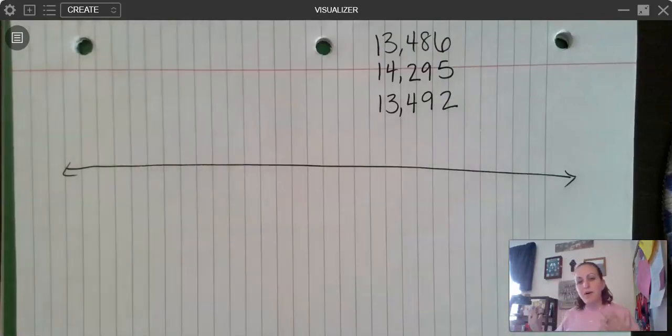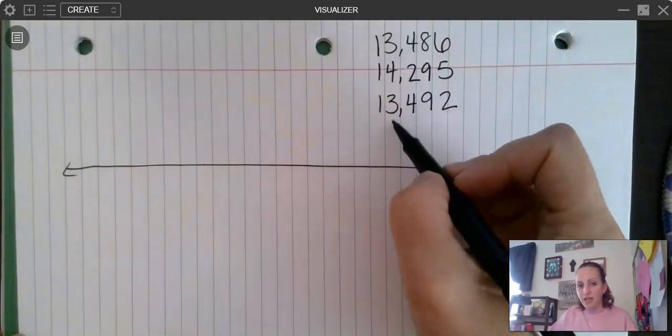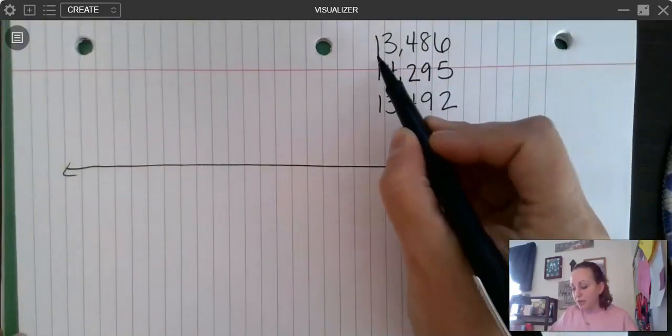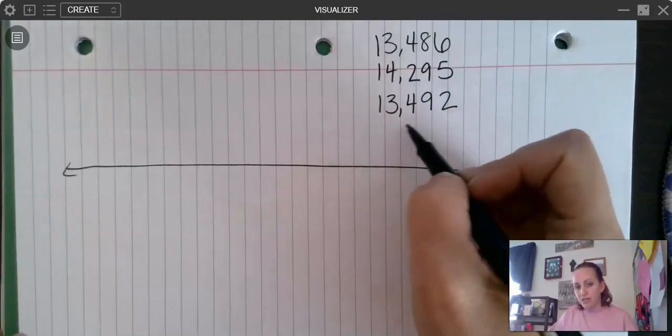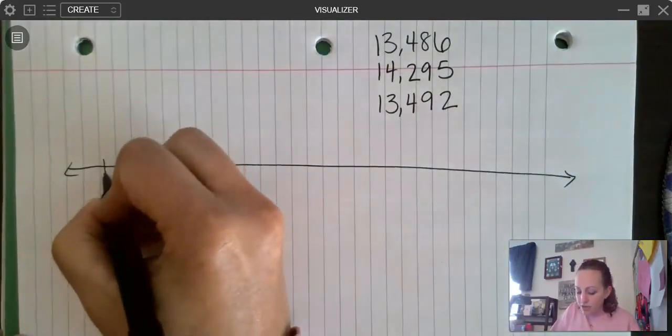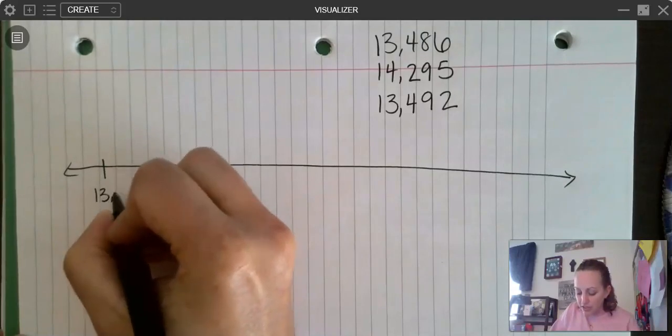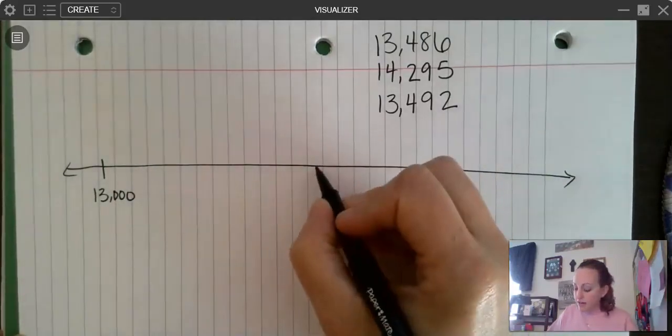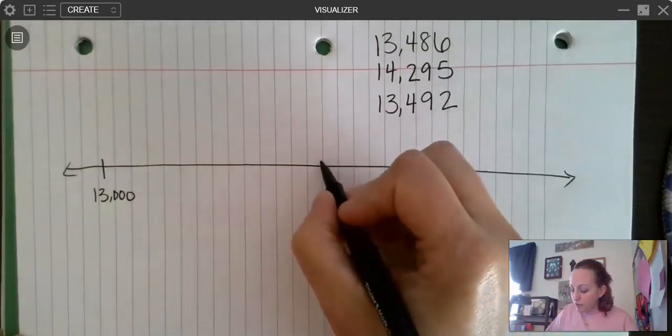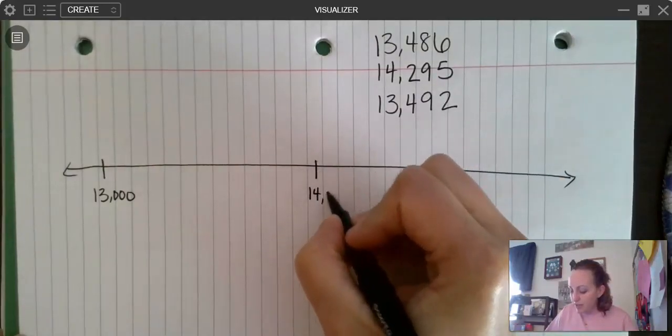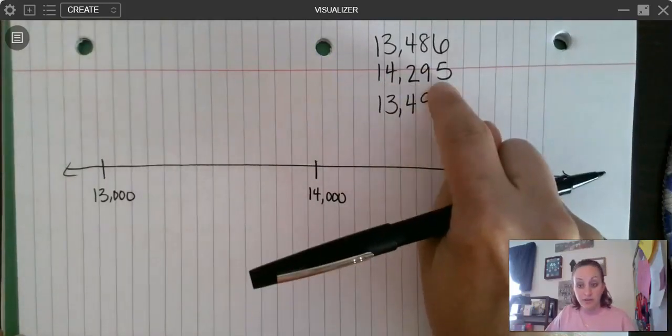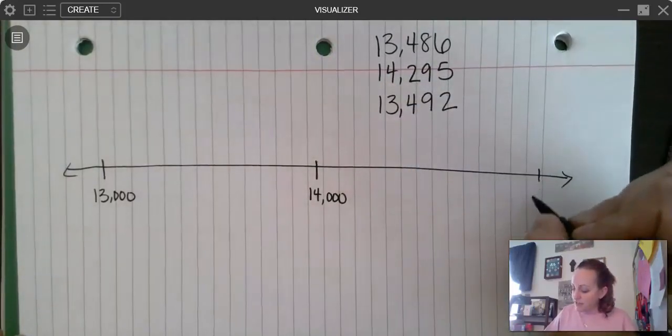And I want to think about, well, what numbers will these fall in between? And so I'm going to kind of take a look at the higher place values on my numbers. Okay. We have 13,000, 14,000, 13,000. So my lowest number on my number line is going to be 13,000. Okay. And then right here in the middle, I'm going to put 14,000 and I'm putting it in the middle because this number is bigger than 14,000 because these aren't all zeros. Right. And then I'm going to put 15,000 over here.